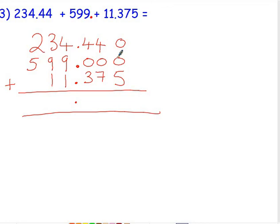So starting in our thousandth column on the right: 0 add 0 add 5 is 5. 4 add 0 add 7 is 11, 1 down, carry 1. 4 add 0 add 3 is 7, and the one we carried is 8. 4 add 9 add 1 is 14, 4 down, carry 1.